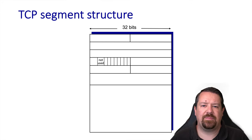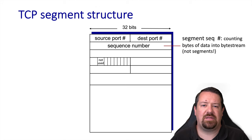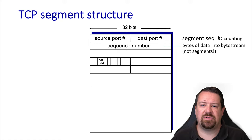Here is the structure of a TCP segment, including its header fields. If you think back to the UDP segment, you'll notice that this is significantly more complex. One thing it has in common with UDP is the source port and destination port, both of which are 16-bit fields. The TCP segment uses a 32-bit sequence number, but one important thing to note is that this number counts the bytes in the byte stream, not the number of segments — so it works a little differently than the examples we saw of selective repeat and go-back-N.